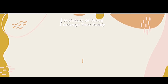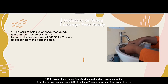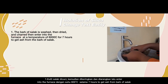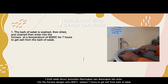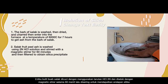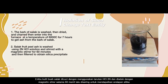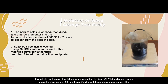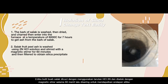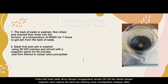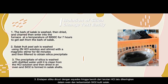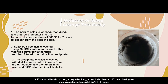Isolation of silica from salak bark. Step 1: The bulk of salak bark is washed and charred, then placed into a furnace at a temperature of 600 degrees Celsius for 7 hours to obtain ash from the salak bark. Step 2: The salak bark ash is washed using a 2N HCl solution and stirred with a magnetic stirrer for 60 minutes, then filtered to obtain a silica precipitate.